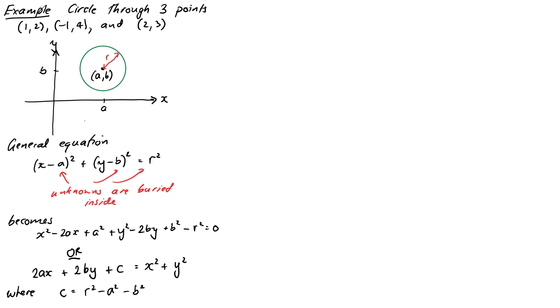So notice I've rearranged it so that the unknowns which are now a, b and c are all on the left hand side. And then the things involving purely things we know which will be the coordinates x's and y's are on the right hand side. So if we have three points x1, y1, x2, y2 and x3, y3 and substitute them in, we get three equations in a, b and c.